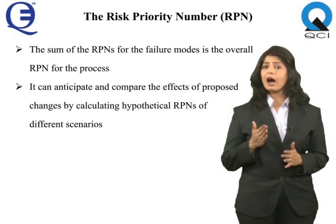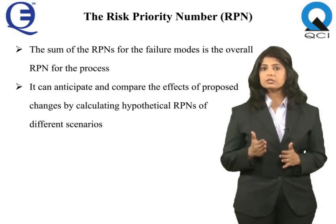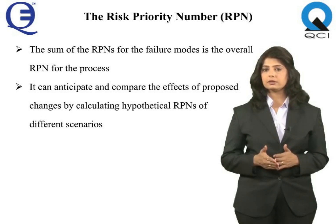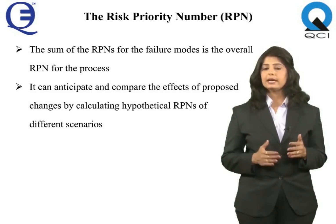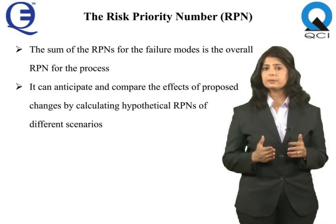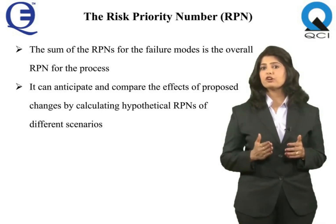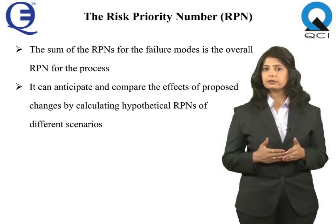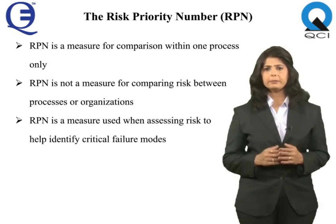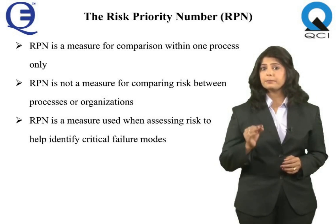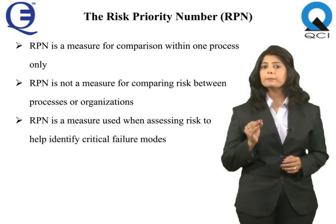The sum of the RPNs for all failure modes is the overall RPN for the process. As an organization works to improve a process, it can anticipate and compare the effects of proposed changes by calculating hypothetical RPNs of different scenarios. Just remember that the RPN is a measure for comparison within one process only.